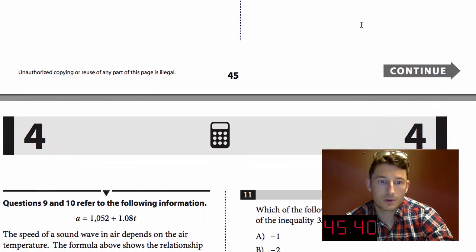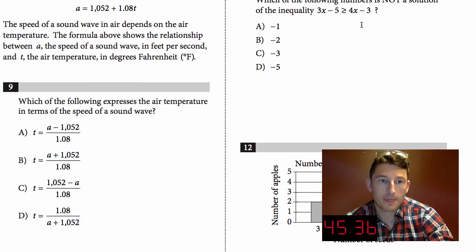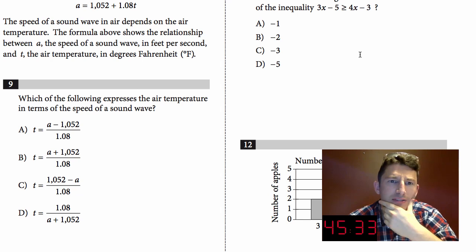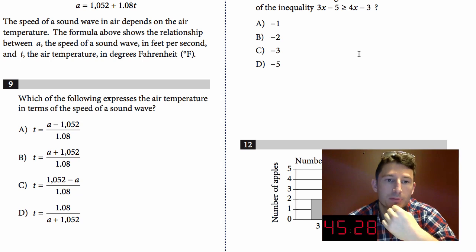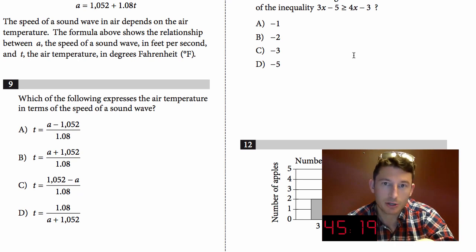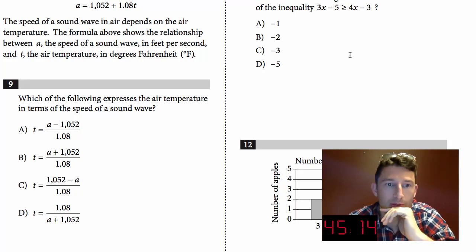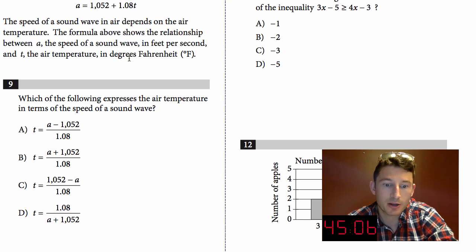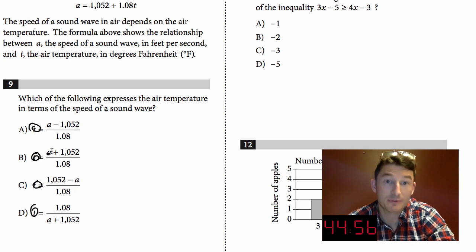Number nine: The speed of a sound wave in air depends on the air temperature. The formula above shows the relationship between a, the speed of a sound wave in feet per second, and t, the air temperature in degrees Fahrenheit. I'm reading this, I'm already getting a little... when it gets wordy you start going 'what the heck?' Let's just see what we can figure out. Which of the following expresses the air temperature in terms of the speed of a sound wave?